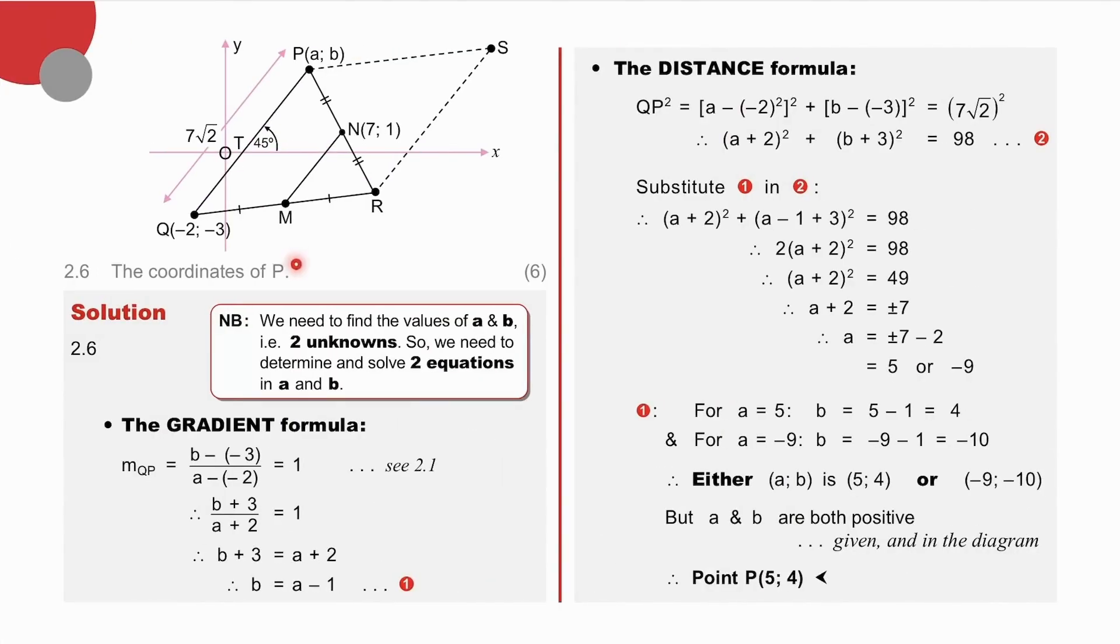Lastly, the coordinates of P with unknowns A and B. We know that the gradient of PQ is equal to 1, and that the length or distance of PQ is equal to 7 root 2. And so we involve A and B in these two formulae to produce two equations in A and B which we solve. This equation and that equation. And we arrive at two options for AB, namely 5, 4, or a point with negative coordinates. But A and B are both positive, this was given, but we can also see in our diagram that this point is in the first quadrant, and therefore A and B should be positive. And 5, 4 is our answer.